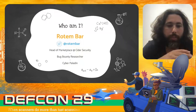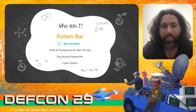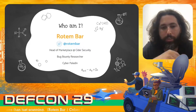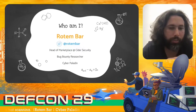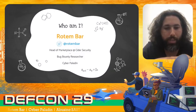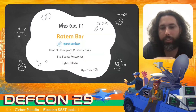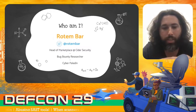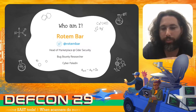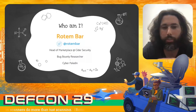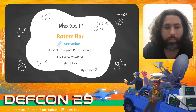So who am I? I'm Rotem. I'm the head of marketplace at Cytos Security — a startup I joined a few months ago — but more importantly I'm a bug bounty researcher. I've played with lots of different programs over the years and I've been a cyber practitioner for the last 20 years. I started my infosec career 20 years ago, doing everything from application testing to infrastructure testing to developing and now abusing SaaS tools.